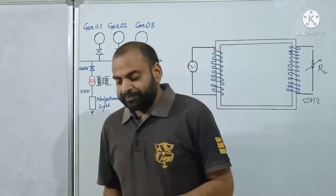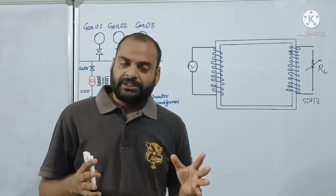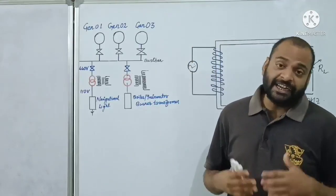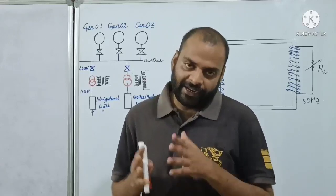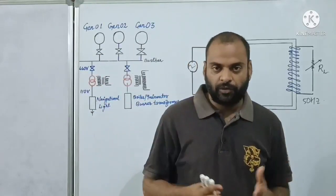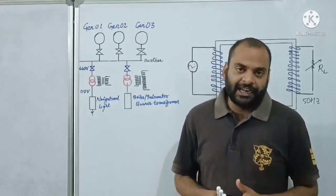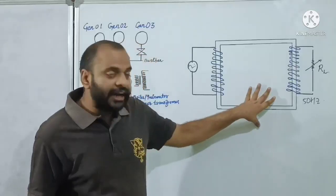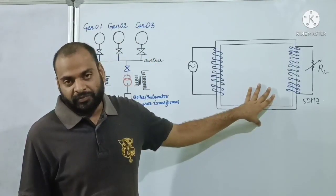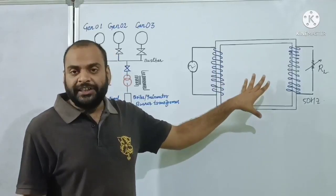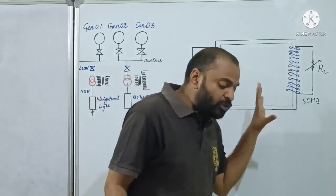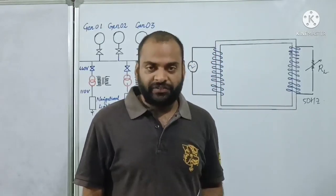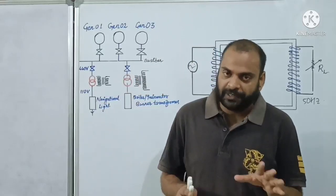Electrical machines are categorized into two parts: rotating machines and electrostatic machines. Rotating machines are again classified into two types — that is motor and generator. Electrostatic machines are classified into one type, that is transformer. Transformer comes under electrostatic machines. The name itself — electrostatic — means it is an electrical device but static in nature. There is no rotating part.